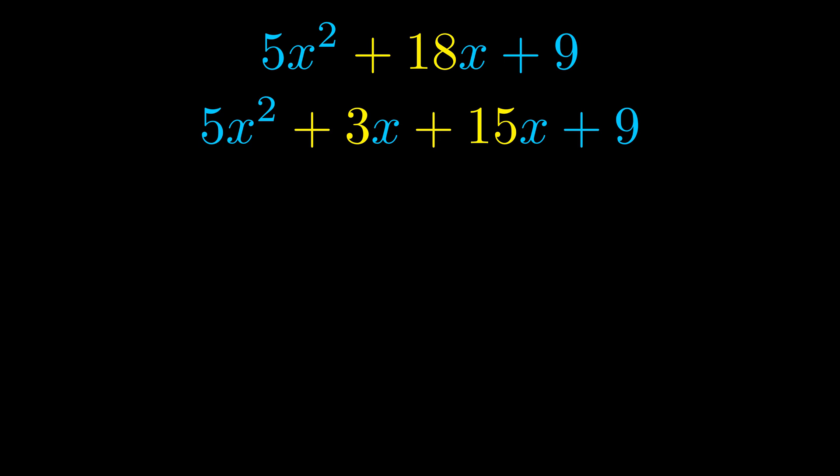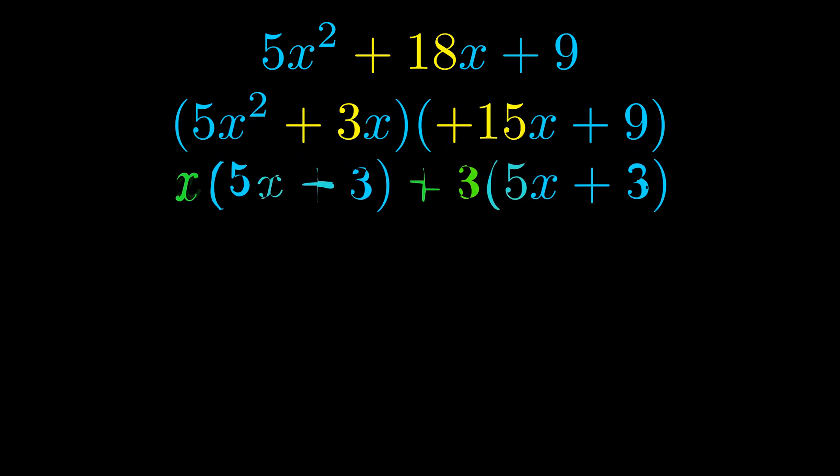Once we've done this, we go ahead and put parentheses around the first term and the last term. And we do that so that we can take the greatest common factor out of both terms. We can see the greatest common factor is now outside in green.